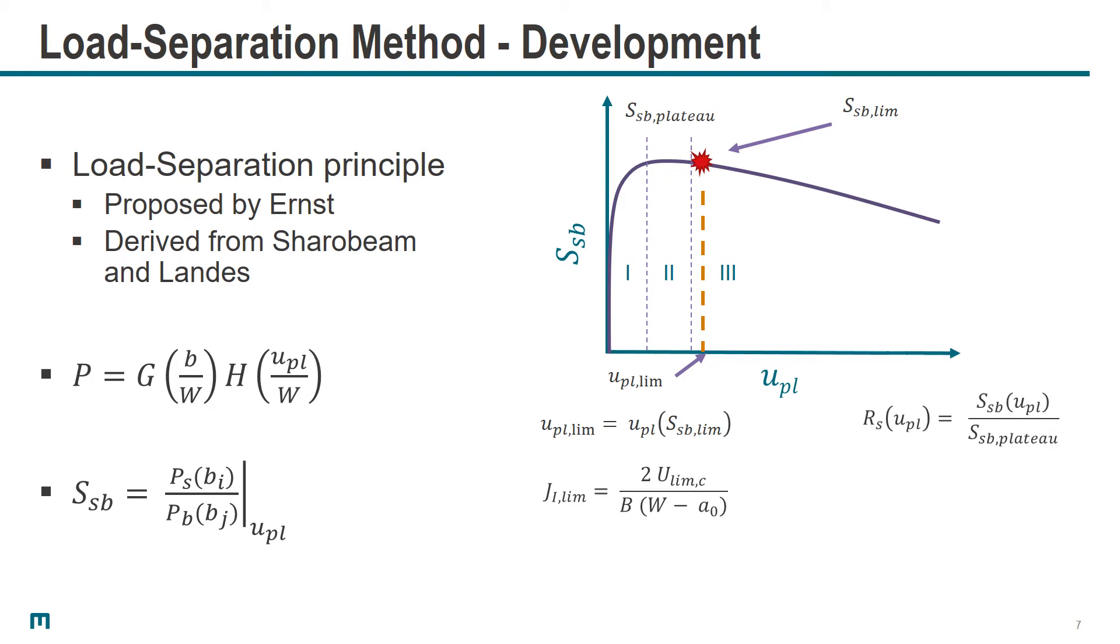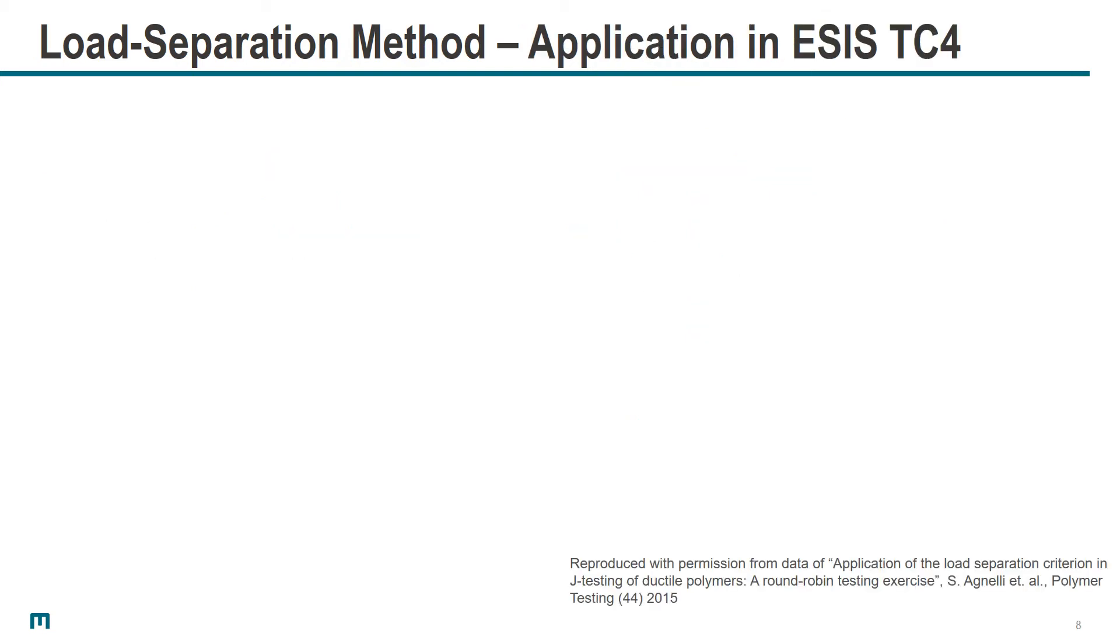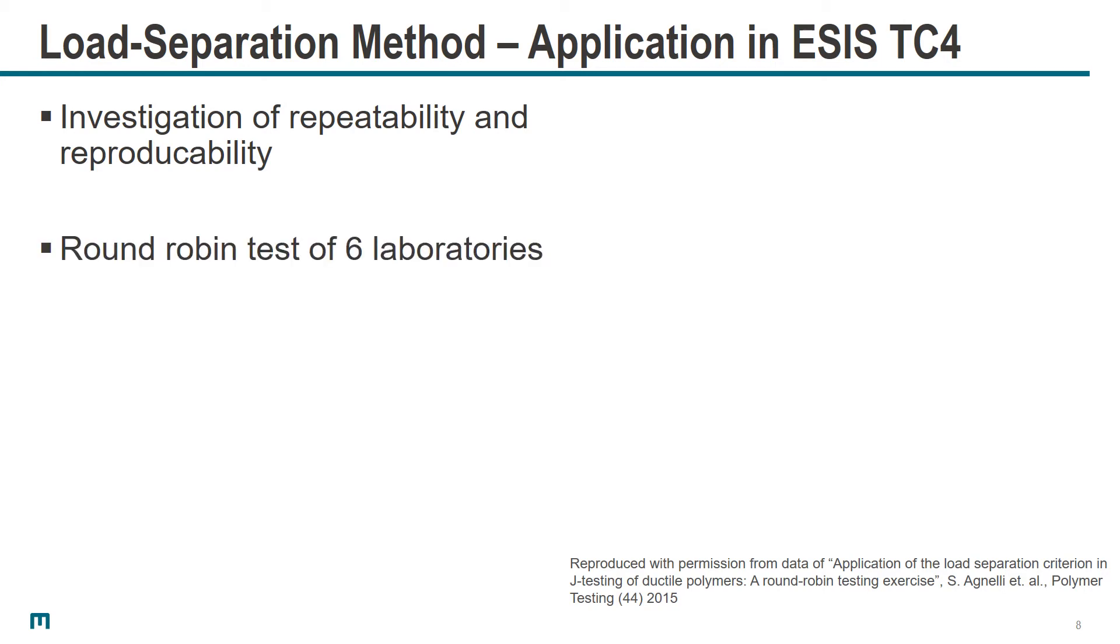Additionally, you can normalize the curve with the plateau value itself and look at the slope in the third region, which indicates how much plastic deformation is necessary to advance a crack through the material. This gives us the chance to use the load separation method and the two values J_1 Lim and MS as fracture parameters to compare materials without the need to determine delta A on the fracture surface. But the question is, how good is the reproducibility and repeatability of this method?